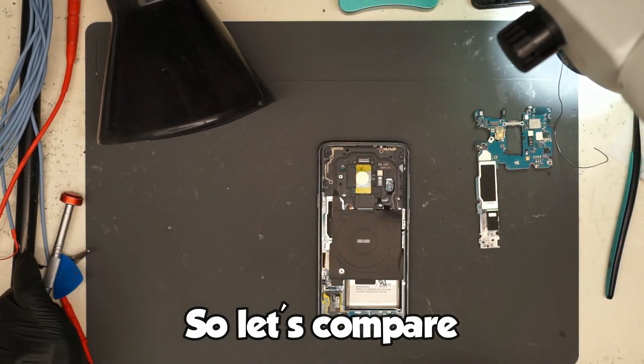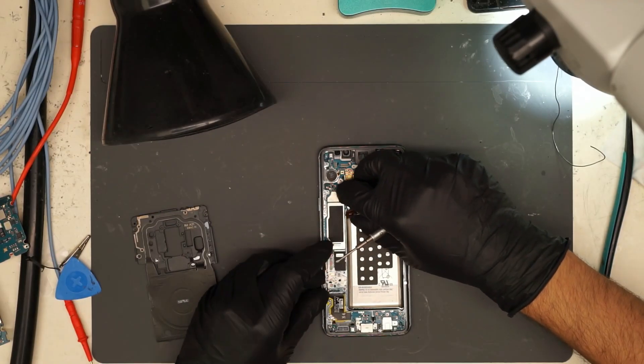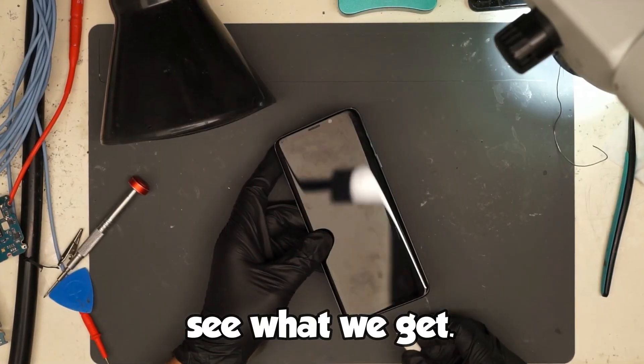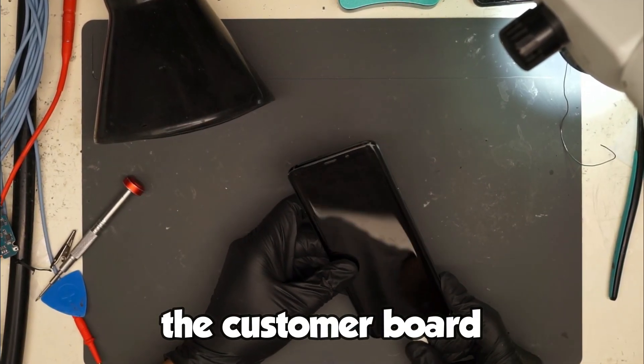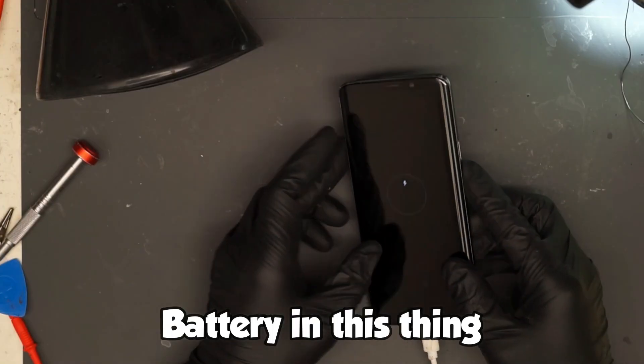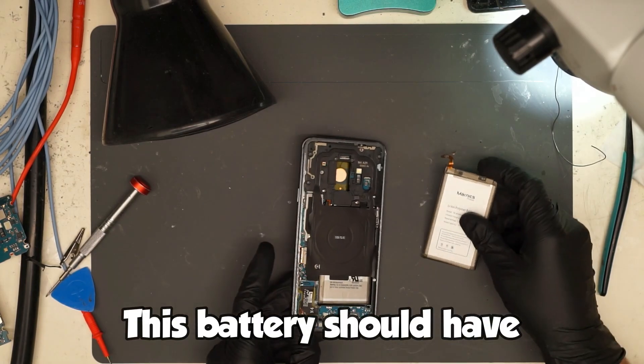So let's compare to our customer board. See what we get with our customer board plugged in. Charging symbol, good. Battery in this thing is super dead. Yeah, all right, this battery should have some juice.